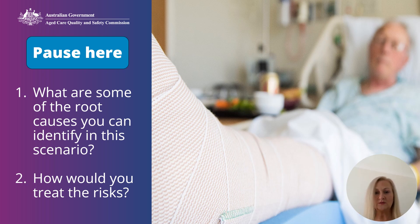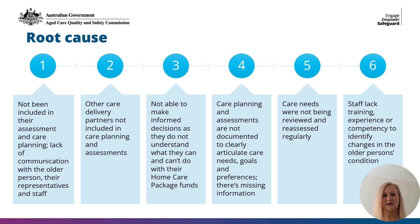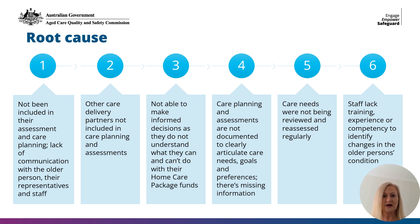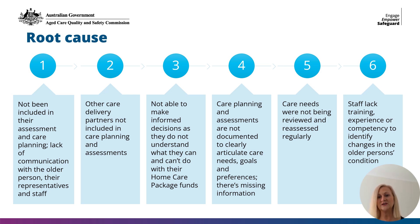Pause to think about what the root causes or underlying issues are in this scenario and how you would treat the risks. Six root causes have been identified: one, older people and their representatives have not been included in their assessment and care planning and there's a lack of communication; two, other care delivery partners such as their GP have not been included in care planning and assessments; three, older people are not able to make informed decisions as they don't understand what they can and can't do with their home care package funds; four, care planning and assessments are not documented to clearly articulate the person's needs, goals and preferences, and there is missing information; five, care needs were not being reviewed and reassessed regularly; and six, staff lack training, experience or competency to identify changes in a person's condition.